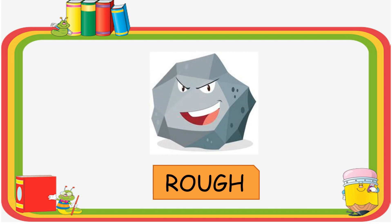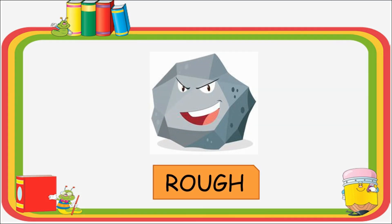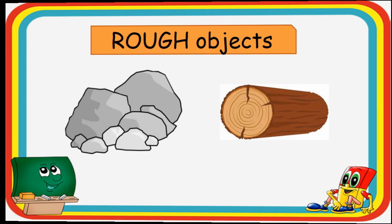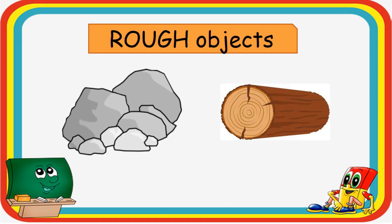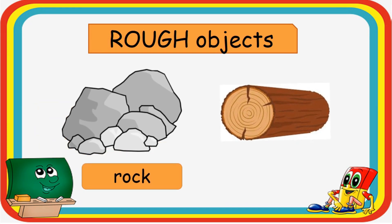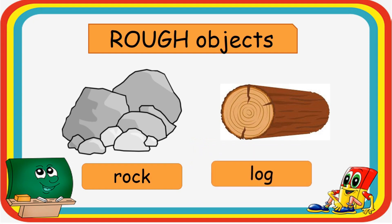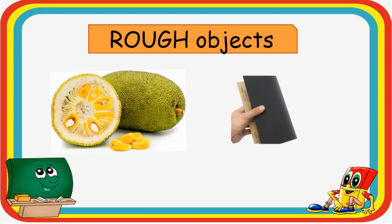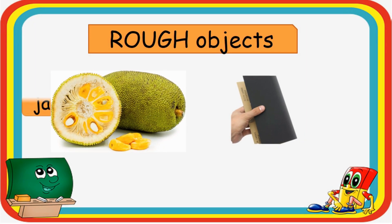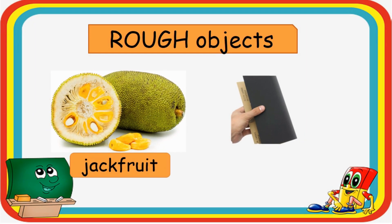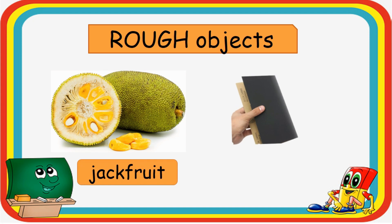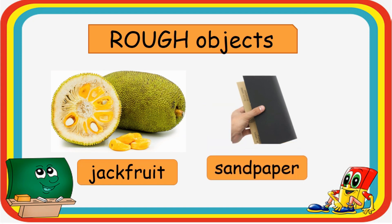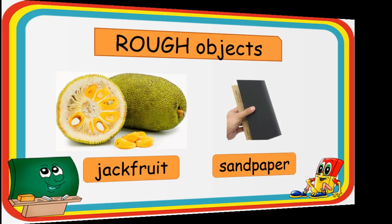Here are the examples of rough objects: rock, log, jackfruit, and sandpaper.